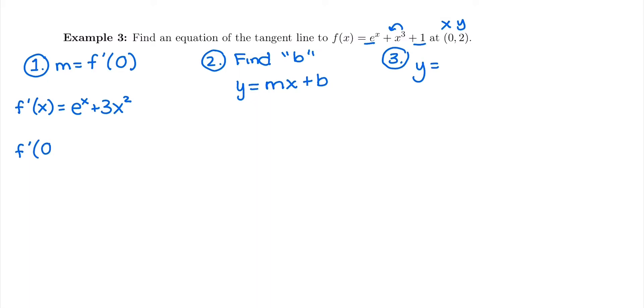Now I'm going to plug in f prime of whatever the x value is. So that equation, f prime of x, will tell me the slope of the tangent line for any x value I want. But we're asked to be tangent at the point 0, 2. So I'm going to do e to the 0 plus 3 times 0 squared.